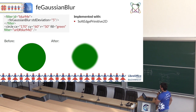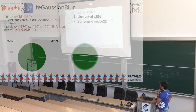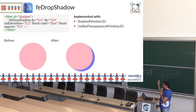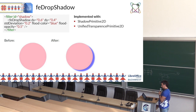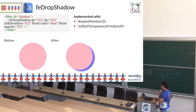This is another kind of filter — the drop shadow. It basically uses different attributes like the deviation, flood color, and opacity. In order to implement this filter, I had to use the shadow primitive and then the unified transparent primitive.